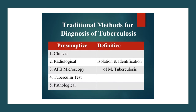The various traditional methods for diagnosing tuberculosis include clinical diagnosis, radiological diagnosis, acid fast bacilli microscopy by ZN staining, tuberculin test, pathological examination of biopsy, and definitive diagnosis by isolation and identification of Mycobacterium tuberculosis.